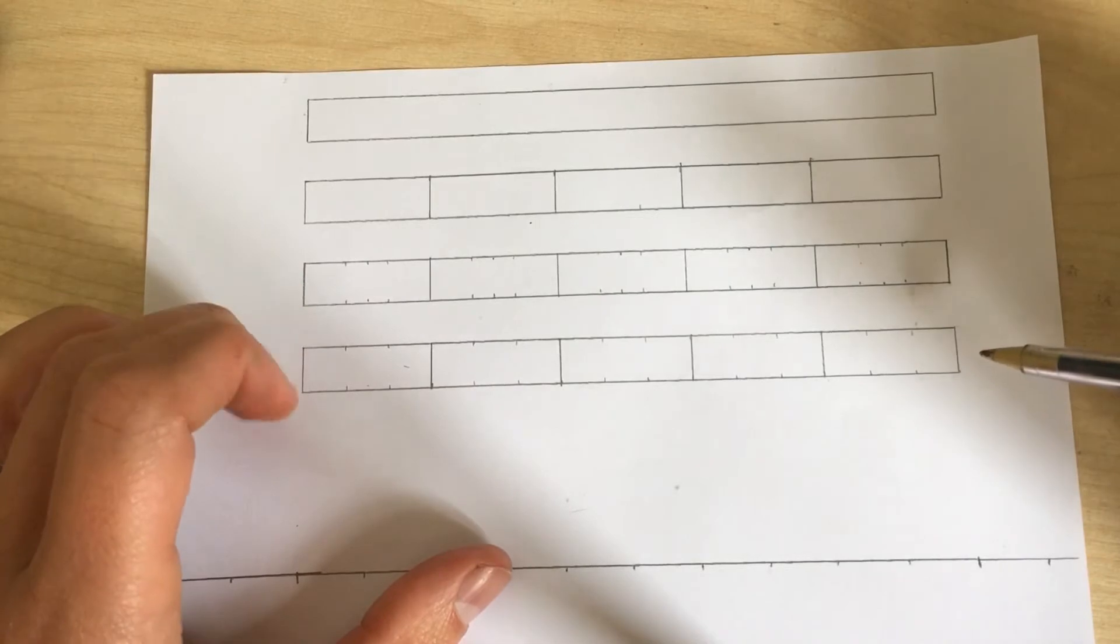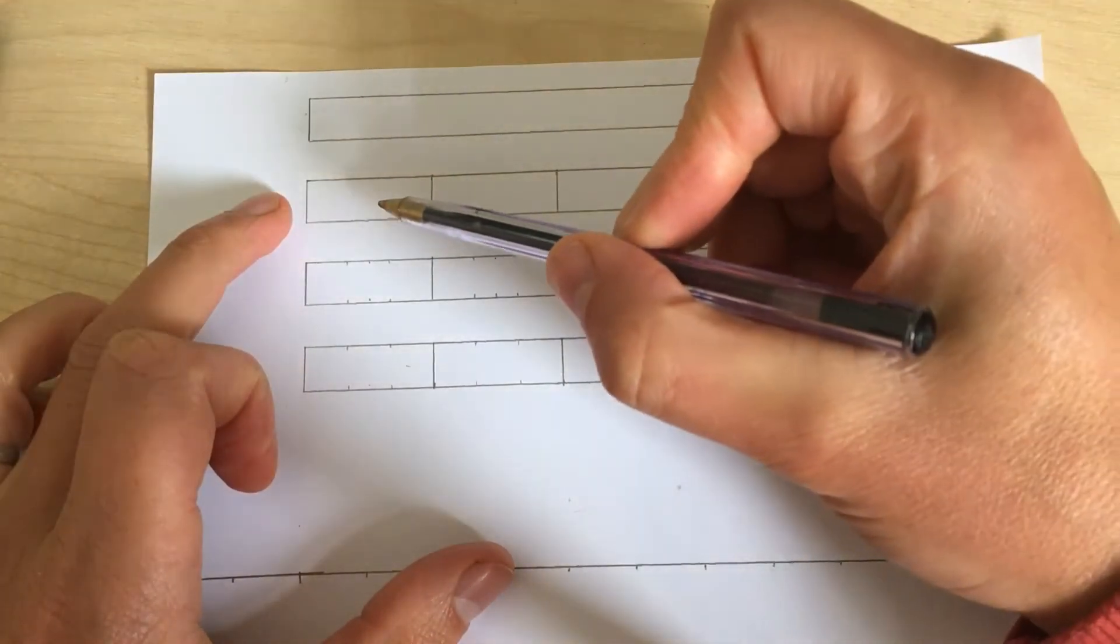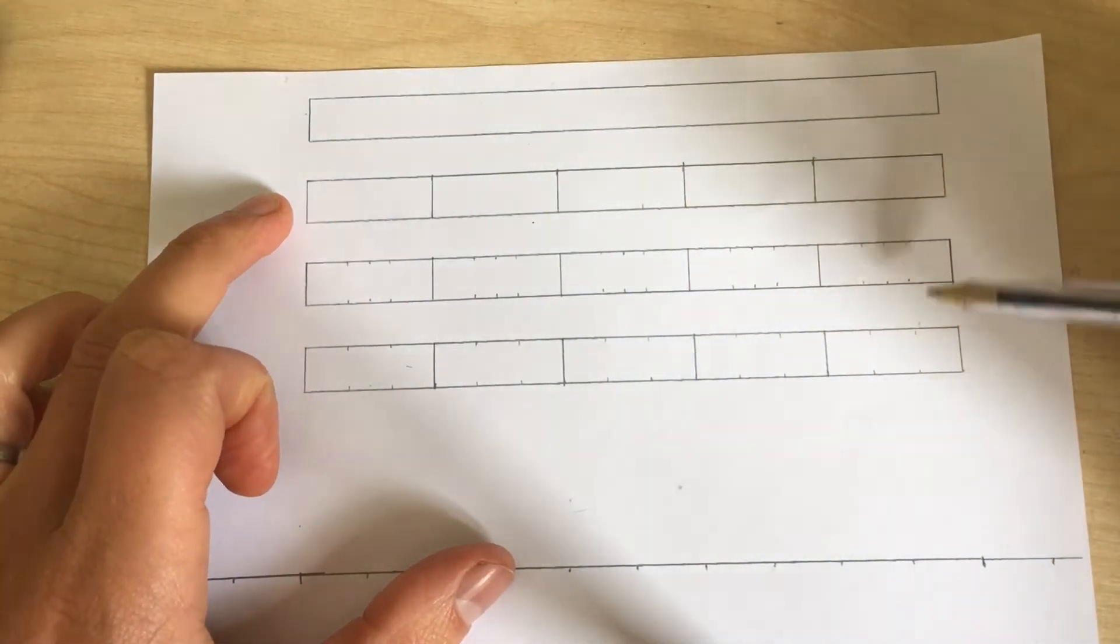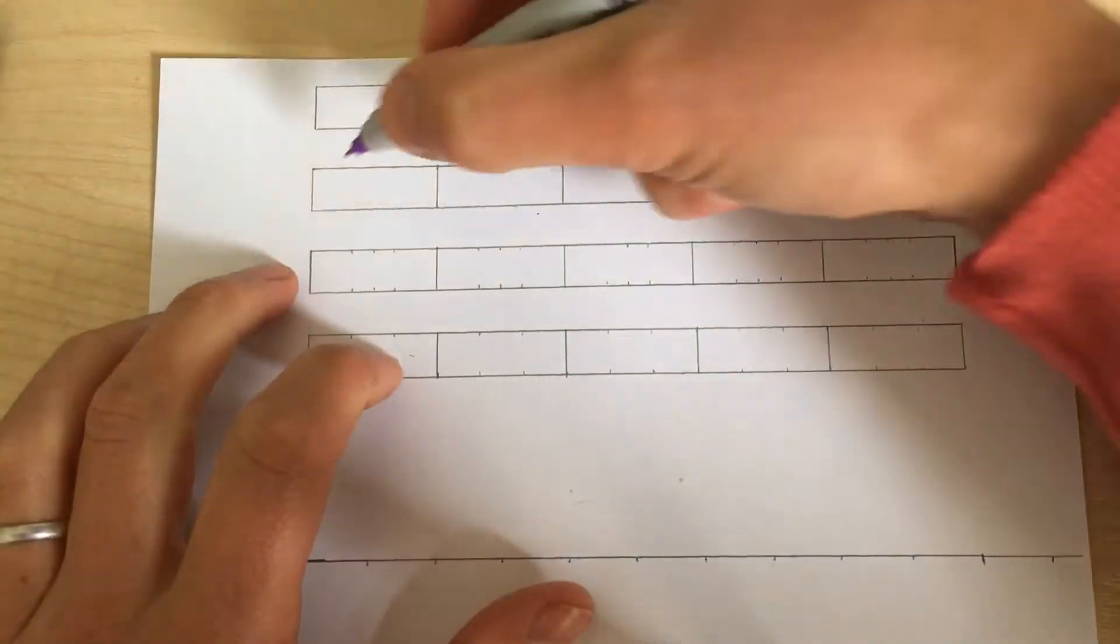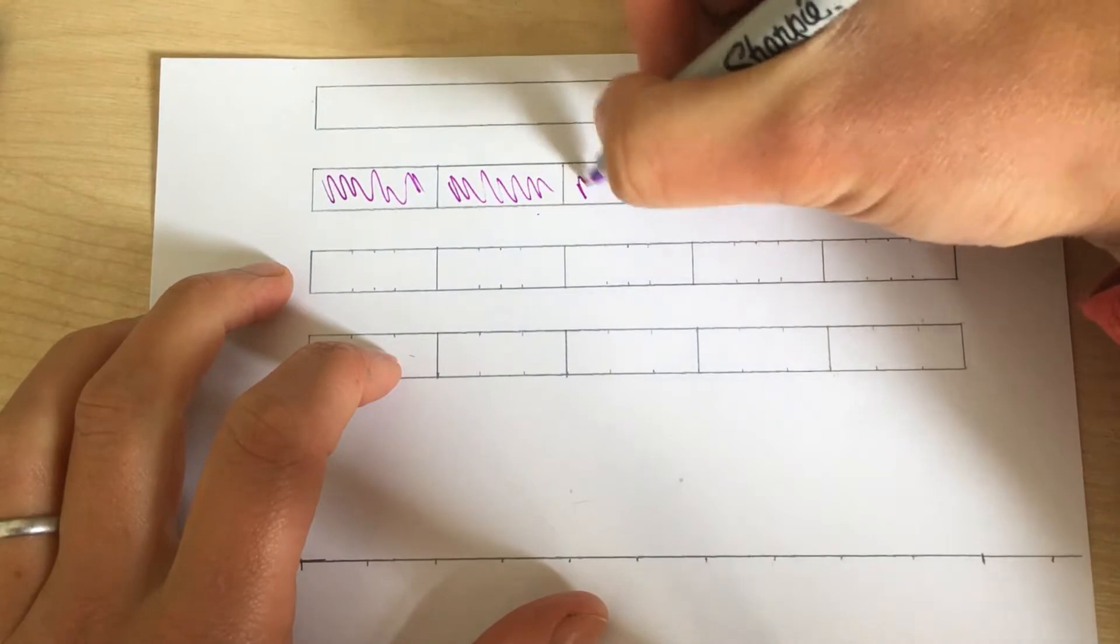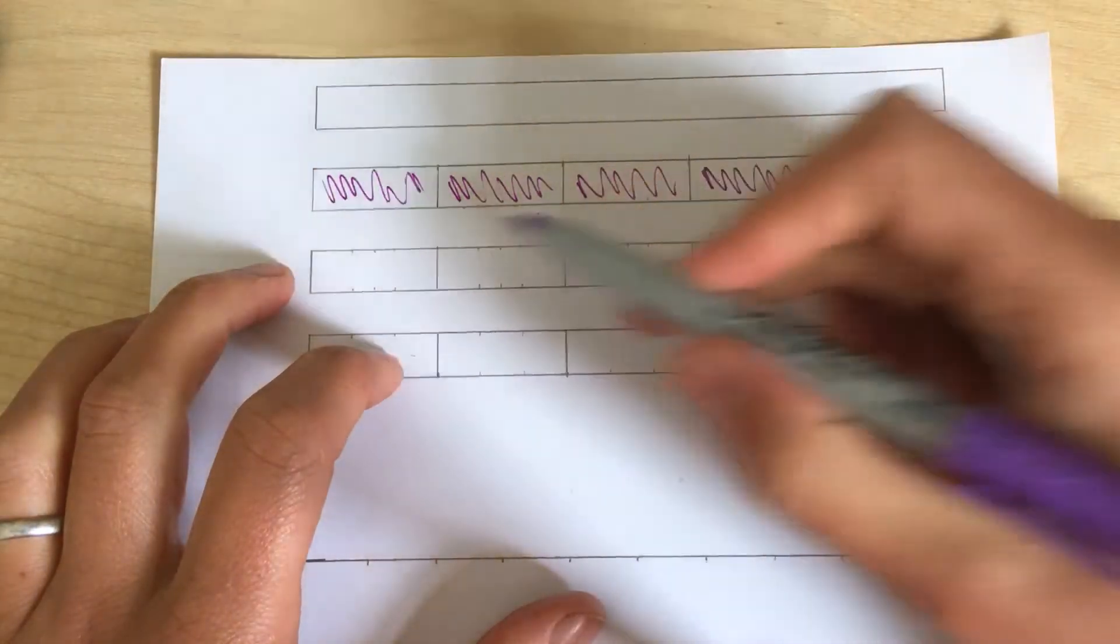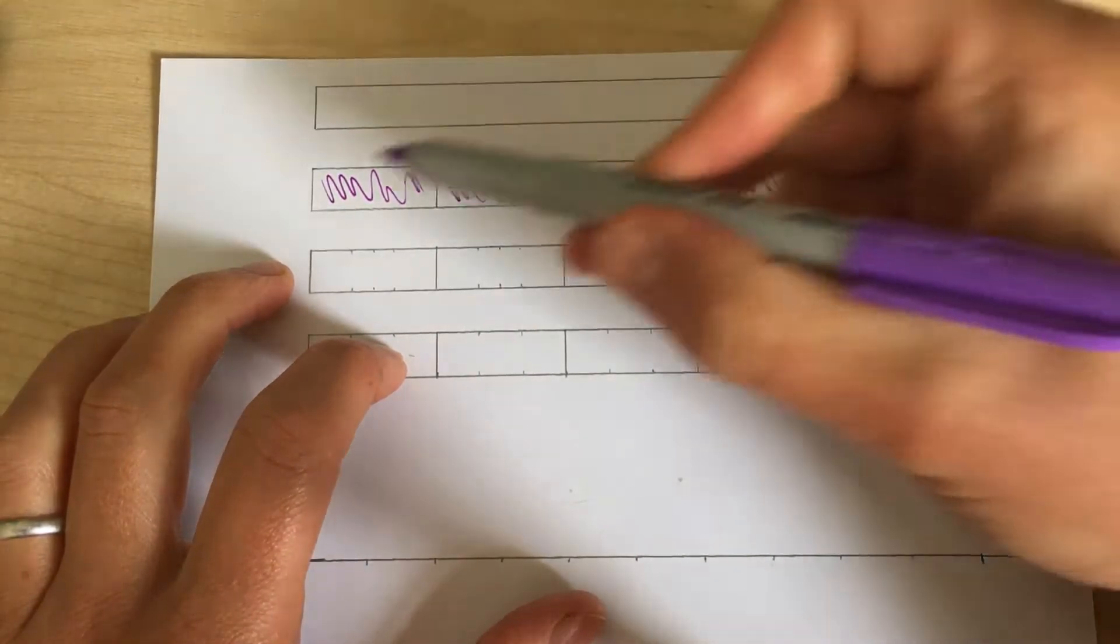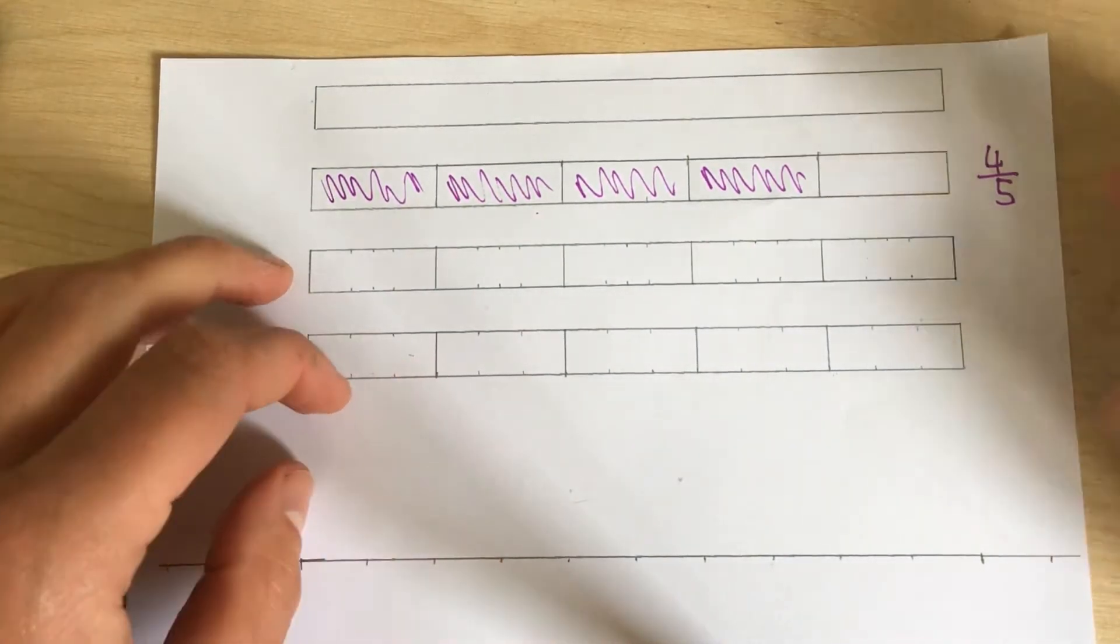Now each of the other bars are the same length. This second one's been split into one, two, three, four, five equal pieces as have the others. Well, I want to shade four pieces. One, two, three, and four. Now this is representing four fifths. Because four out of the five pieces that are the same size have been shaded.